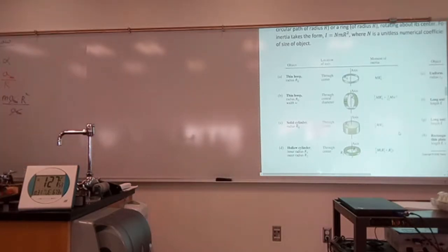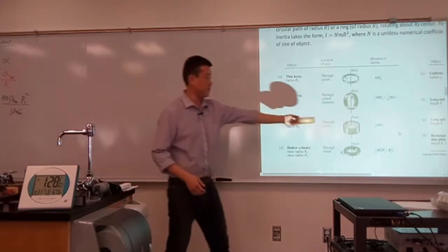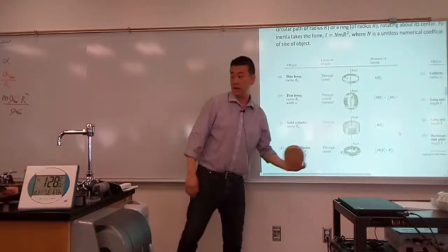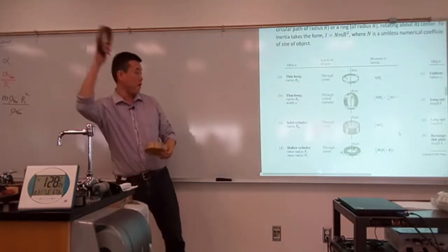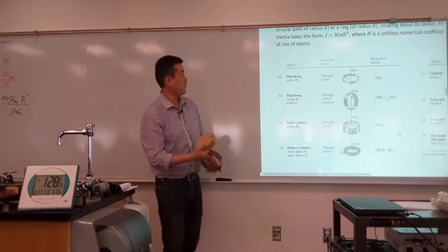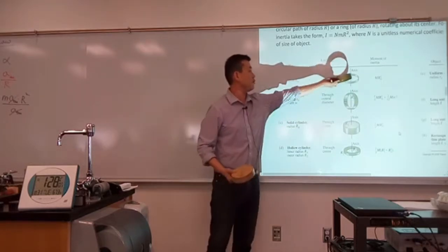As an example, why does the textbook list two different formulas — one for a solid cylinder, and one for a thin hoop?